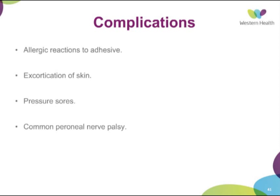For skeletal traction, different pins are used. The Steinmann pin is the most common. The Denham pin is similar to the Steinmann pin but has threads in the middle — it's good for use in osteoporotic bone and for precise reduction. Kirschner wires can also be used. Complications of skeletal traction include infection into bones, distraction at the fracture site from too much force, and damage to ligaments or growth plates — so care is needed to avoid damaging the growth plate, especially in children.